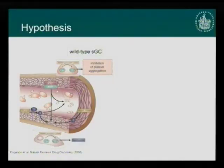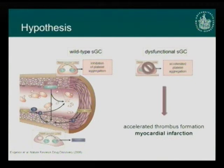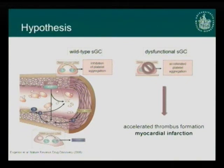Our hypothesis for the underlying pathogenic mechanism is as follows: in platelets, GTP is converted to cGMP by soluble guanylate cyclase, which inhibits platelet aggregation. If you have a dysfunctional soluble guanylate cyclase, you have accelerated platelet aggregation and accelerated thrombus formation, which ultimately leads to myocardial infarction — something we were also able to demonstrate experimentally.